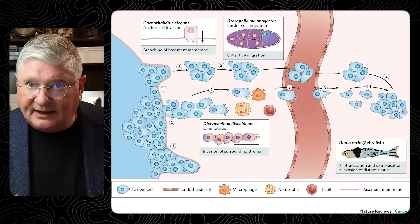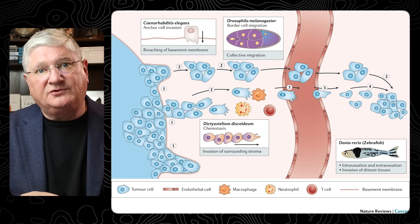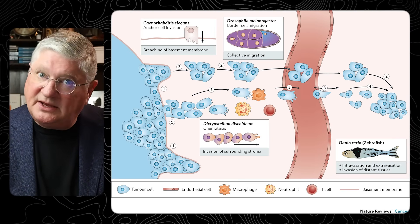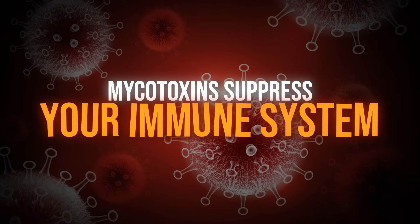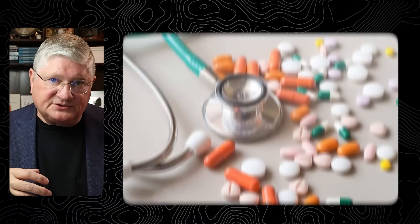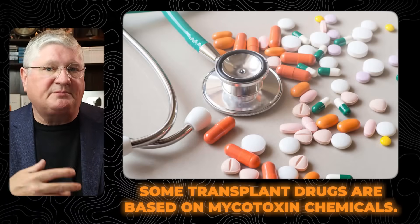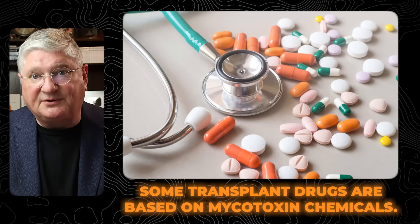Mycotoxins, because we generally don't see them and they affect us chemically, have a way to be permissive to other types of illness that we otherwise may not be experiencing. So they can have things like neurological and immunological side effects. People can have effects on their cardiovascular and digestive system — pretty much every system in your body, joint pain, all sorts of things. Mycotoxins can also be directly immunosuppressive. There are actually immunosuppressive drugs used in transplant medicine that are a mycotoxin chemical synthesized into a drug because they're so immunosuppressive.